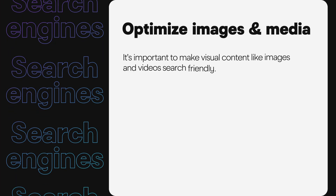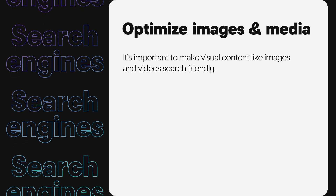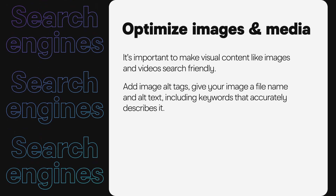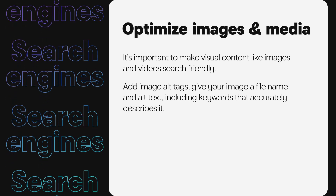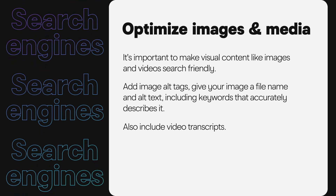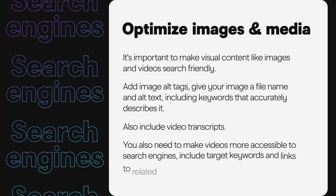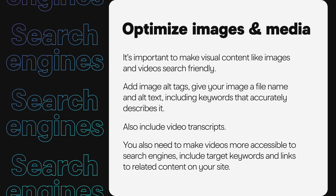While you are optimizing the content, don't forget to optimize images and media. It's important to make visual content like images and videos search friendly. Search engines crawl for relevant content, and that includes images. Add image alt tags — give your image a file name and alt text, including keywords if relevant, that accurately describes it. Also, include video transcripts. You need to make videos more accessible to search engines by including target keywords and links to related content on your site.